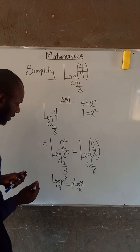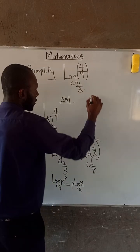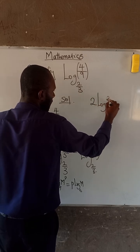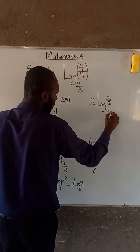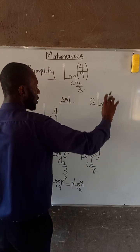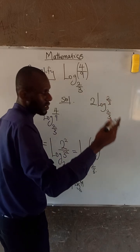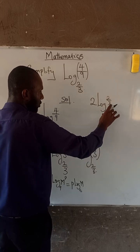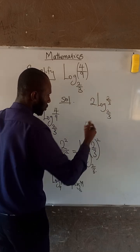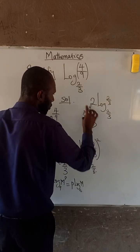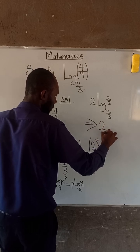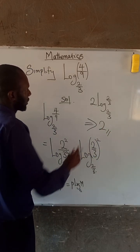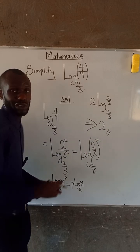Therefore, this becomes 2 log of 2 divided by 3, in base 2 divided by 3. Log m to the base m is equal to 1, and that means log of 2 divided by 3 to the base of 2 divided by 3 is equal to 1. So we have 2 times 1 which equals 2. Therefore, the answer is 2.